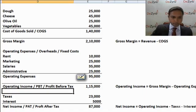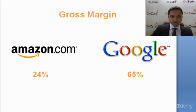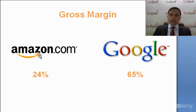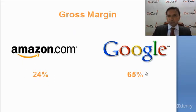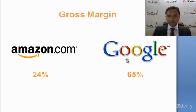To make sure you get the concept of gross margin and net margin, we're going to look at two very popular companies: Amazon.com and Google.com. Amazon's gross margin is 24%, whereas Google's gross margin is 65%. Anyone not well-versed in finance is going to look at this and say Amazon is a terribly run company — their gross margin is one third of what Google's is.